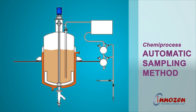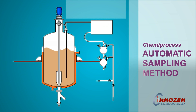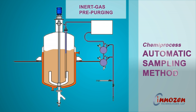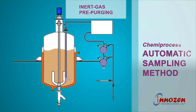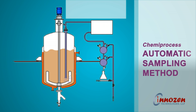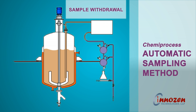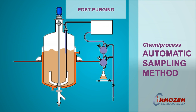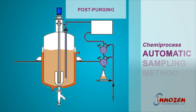Automatic sampling devices developed by Chemiprocess are programmed to perform the following functions in sequence. A: Inert gas pre-purging to bubble out the stagnant reaction mixture held in the dead leg of the sampling tube for a pre-set duration. B: Drawl of the sample under suction and draining the same into the sampling flasks. C: Inert gas post-purging to return the excess reaction mixture back to the reactor.